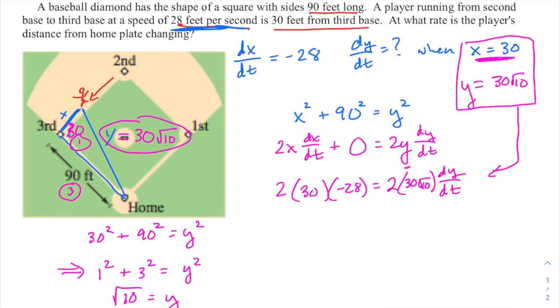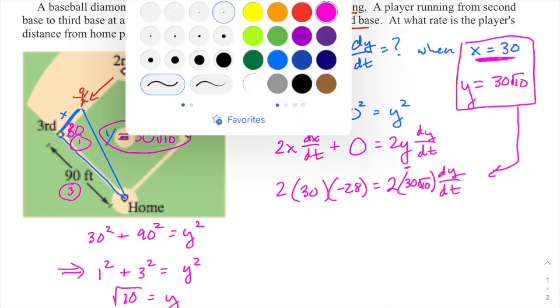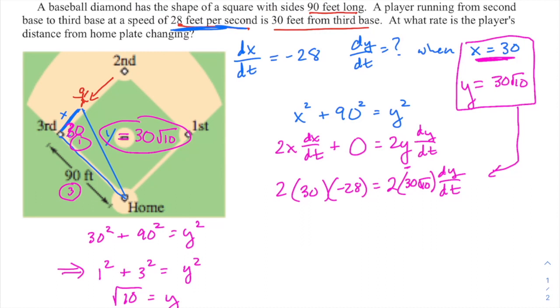Now, even right now, if you divide everything by 2 to solve for dy/dt, and you divide by 2 times 30 root 10, or if you make that 60 root 10, you're gonna see a lot of stuff cancels out here.